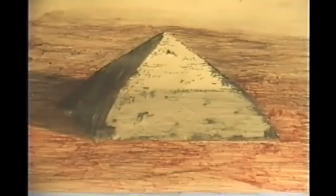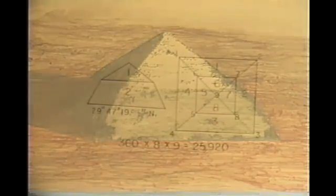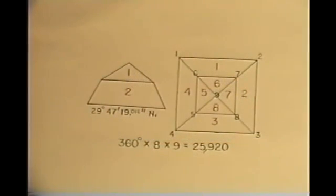This design affords an observer the opportunity to see additional numbers beyond those available from a true pyramid design. Here, instead of only four sides, we see eight. And rather than seeing four base corners and an apex, we see eight corners and an apex. That's nine. 360 degrees times eight times nine: 25,920.